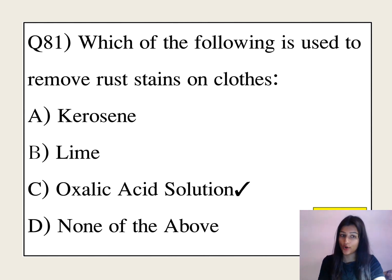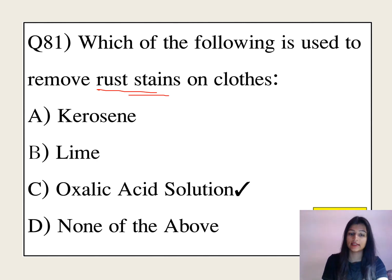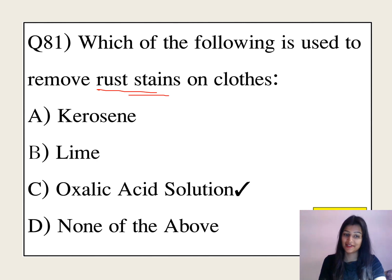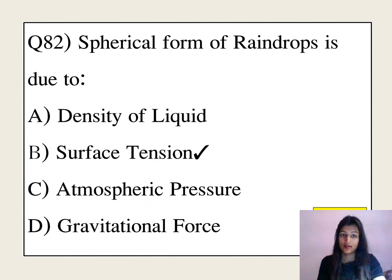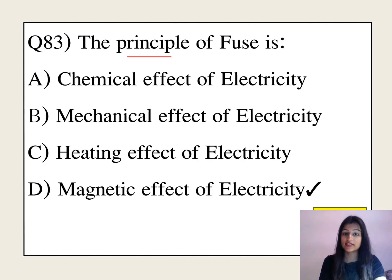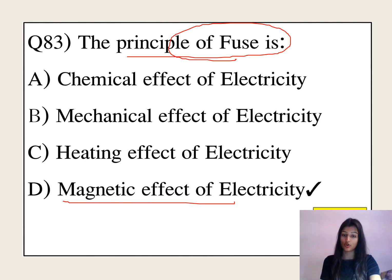Which substance is used to remove rust? You can see the rust marks in your probe — it is removed with the help of oxalic acid solution. The spherical form of raindrops is due to surface tension. The principle of a fuse is based on the magnetic effect of electricity.